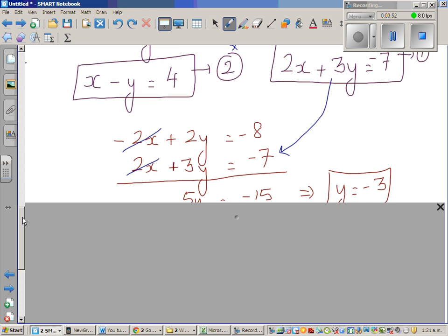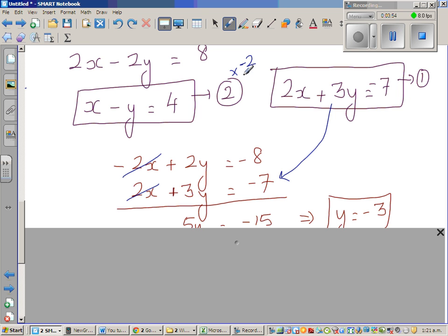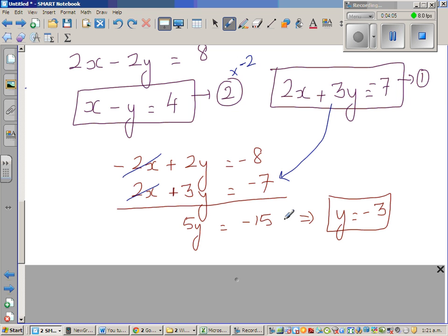If you're multiplying by negative 2, 2x will become -2x, -y will become +2y, and 4 will become -8. So 5y is -15. So y is -3.